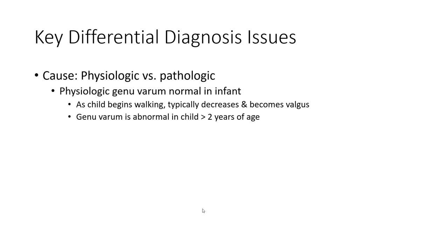Physiology versus pathology: physiologic genu varum is normal in infants. As the child begins walking, the tibia gradually grows and becomes valgus. Physiologic genu varum is abnormal in a child more than two years of age.